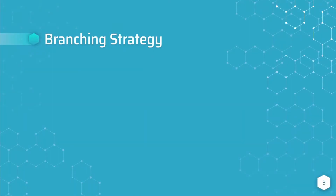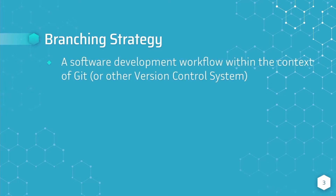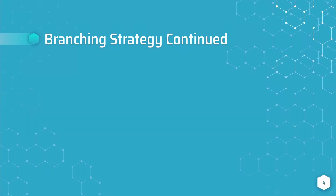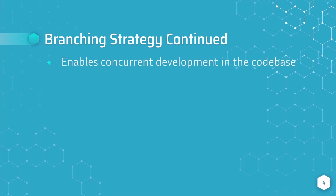What is a branching strategy? A branching strategy is a software development workflow within the context of Git or another version control system. It describes how a development team will create, collaborate on, and merge branches of source code in a codebase. We practiced a very basic branching strategy in the first video using a feature branch. A branching strategy takes advantage of the branching system in a version control system to enable concurrent development in the codebase.